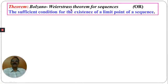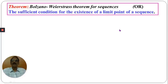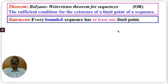The Bolzano-Weierstrass theorem for sequences is also known as the sufficient condition for the existence of a limit point of a sequence. The statement of this theorem is: every bounded sequence has at least one limit point.